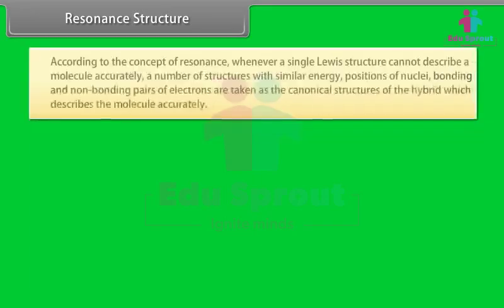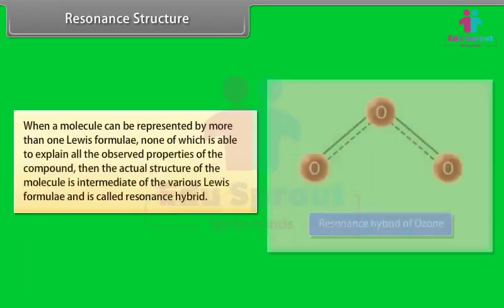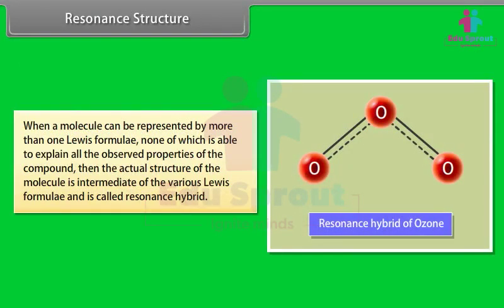According to the concept of resonance, whenever a single Lewis structure cannot describe a molecule accurately, a number of structures with similar energy, positions of nuclei, and bonding and non-bonding pairs of electrons are taken as canonical structures of the hybrid. When a molecule can be represented by more than one Lewis formula, none of which explains all observed properties, the actual structure is intermediate of the various Lewis formulae and is called the resonance hybrid.